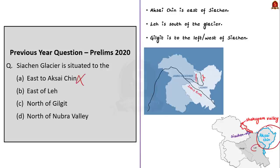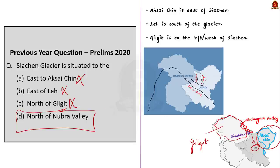Option C: north of Gilgit. From the map, it is clear that Gilgit is to the west of Siachen, so the correct option would be east of Gilgit, not north of Gilgit — also incorrect. That is why the correct answer is option D, which is north of Nubra Valley.